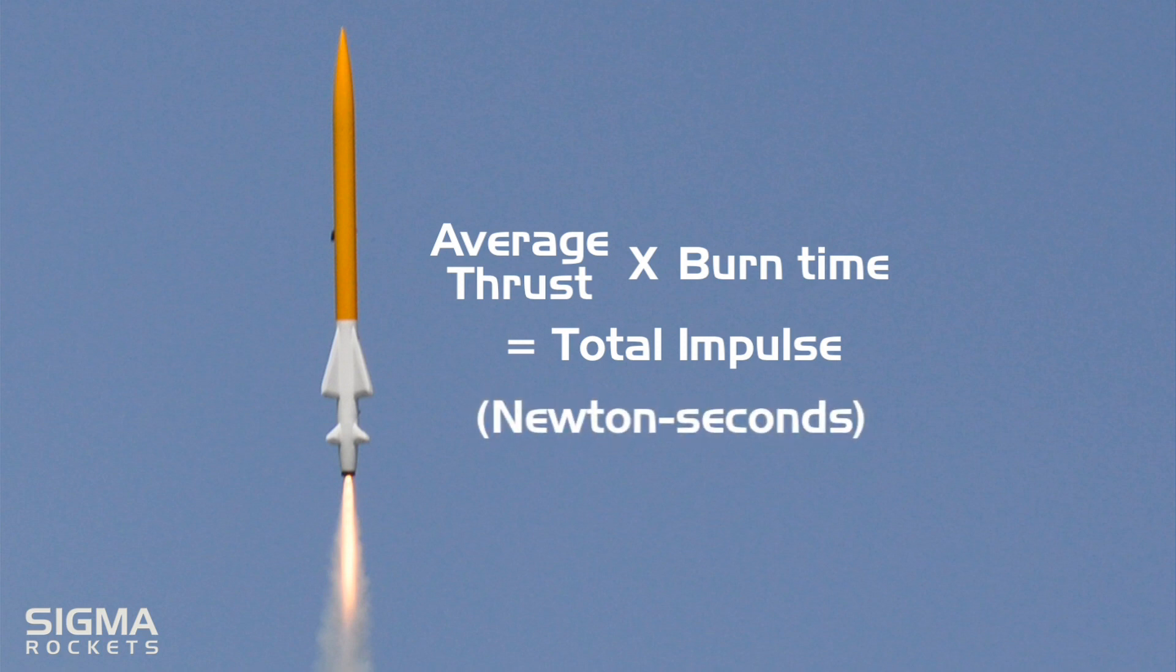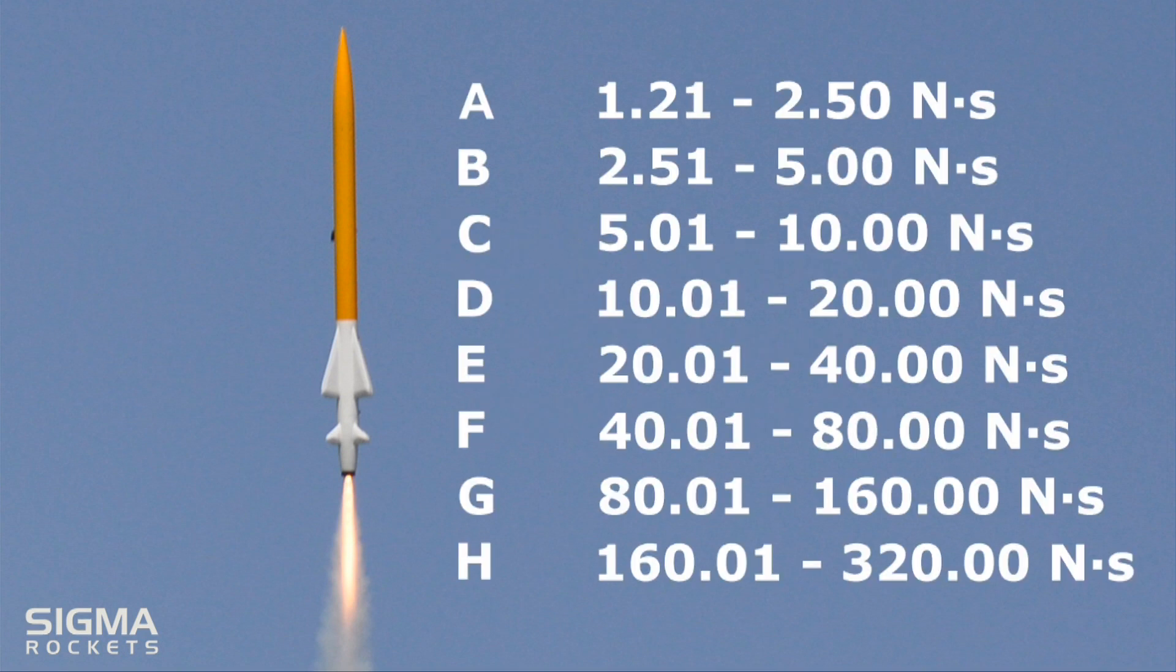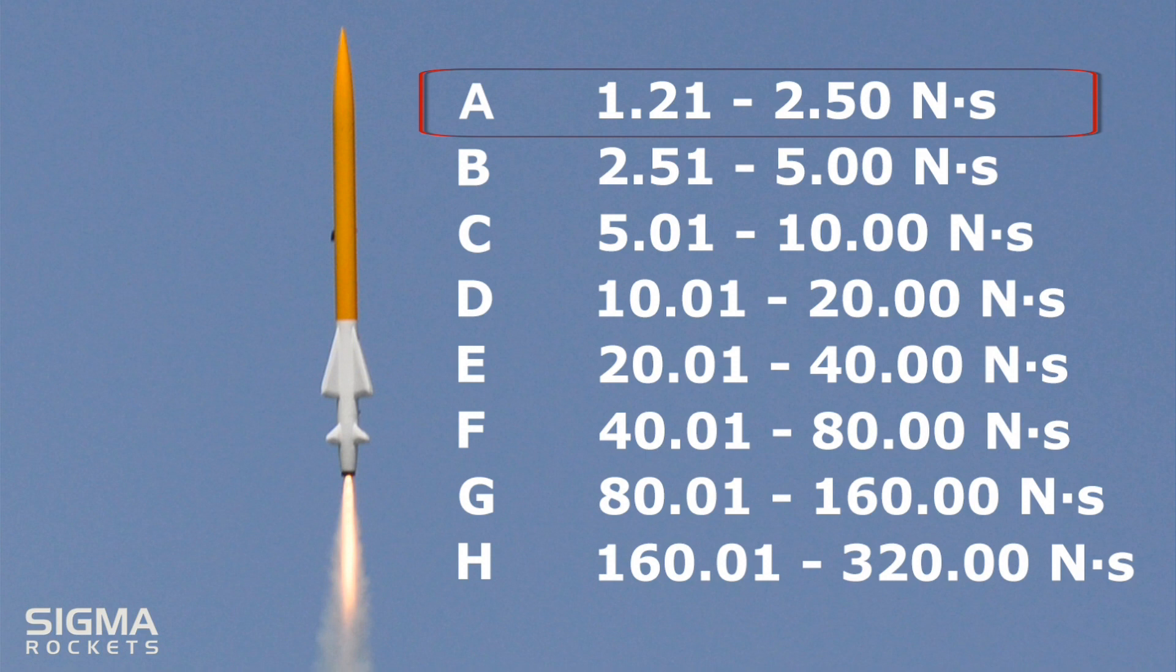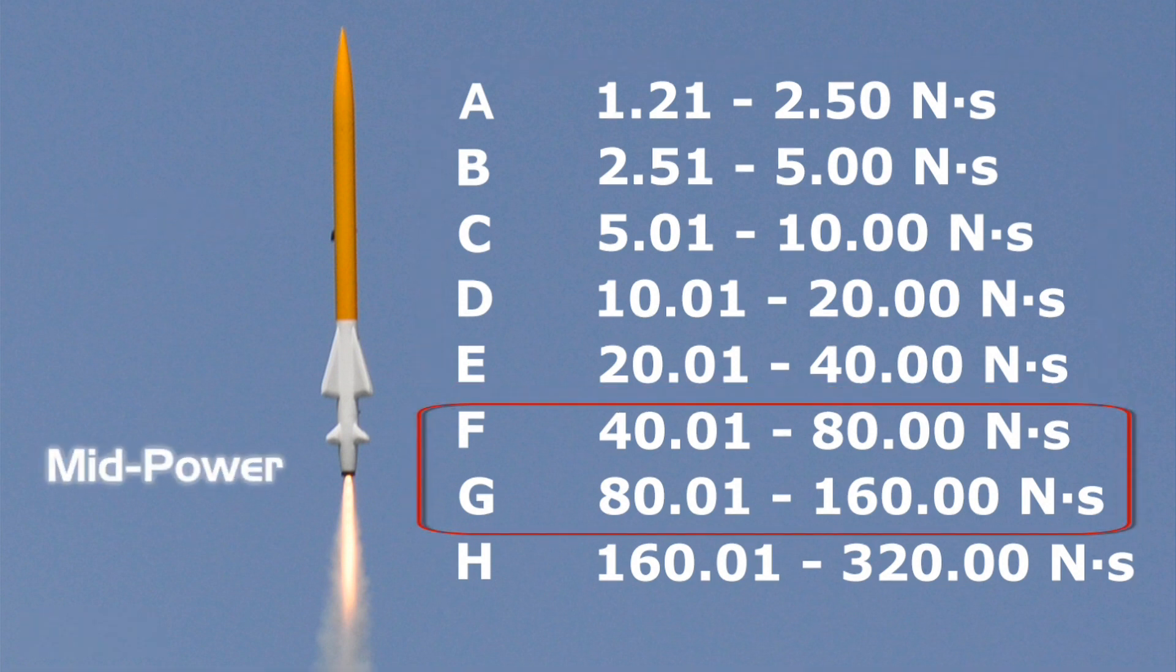We represent total impulse for our motors using ranges, which are assigned to letters. As we can see in our chart, an A motor is any motor that has a total impulse from 1.21 to 2.5 newtons. We can further divide our impulse chart by size specifications.